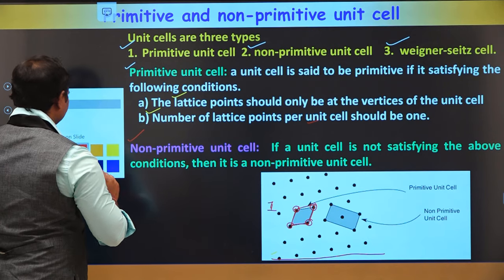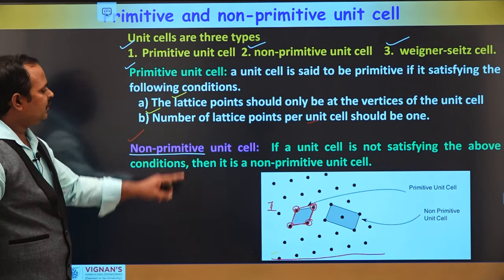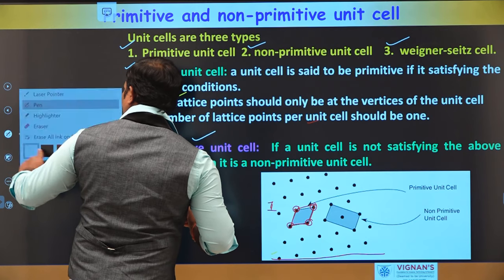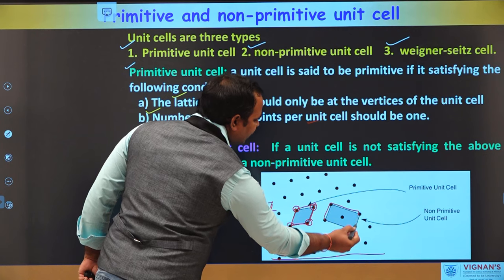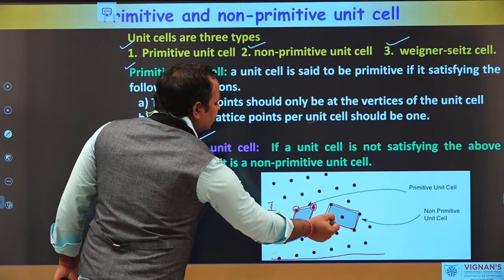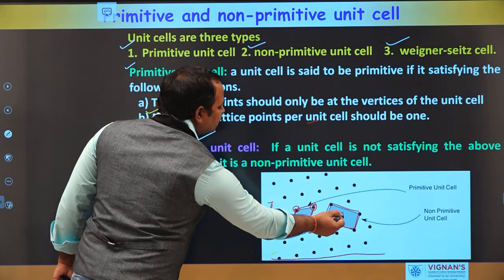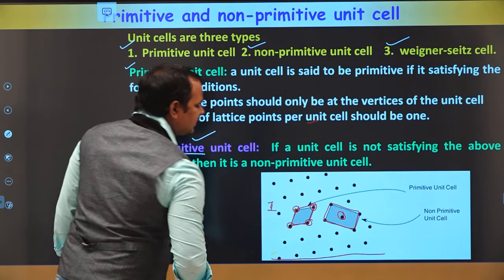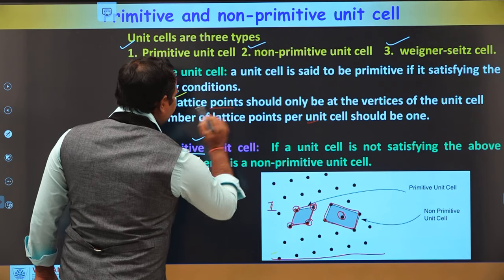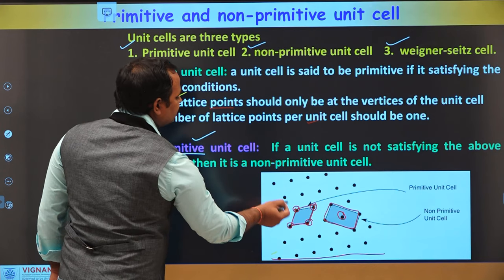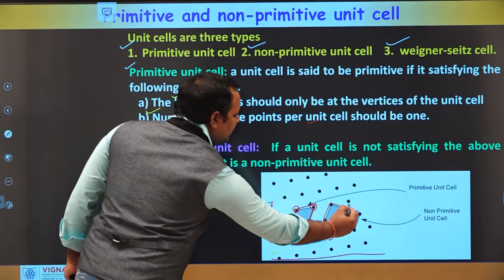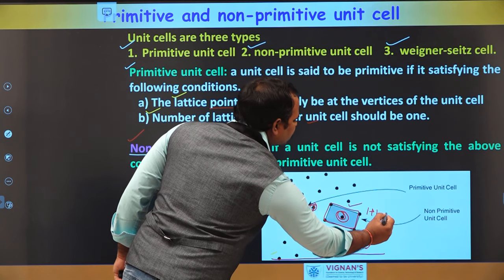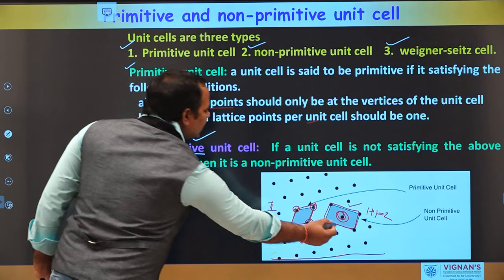A non-primitive unit cell is one that does not satisfy the primitive conditions. In this unit cell from the same lattice, the points are at the vertices but there is another point lying at the center of the unit cell. That means the lattice points are not only at the vertices. The number of lattice points per unit cell is 1 (from vertices) plus 1 (from center) = 2. So this is a non-primitive unit cell.